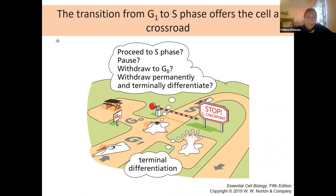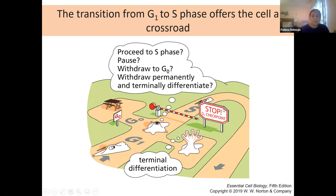The usual downstream target of activated p53 is a gene called p21. Activated p53 as a transcriptional regulator binds to p53 response elements on the genome and activates transcription of those genes, one of which is p21. The p21 protein is a cyclin dependent kinase inhibitor — it will bind to activated cyclin D-CDK complexes for G1 and S and inhibit them so the cell cannot go into S phase and replicate DNA.